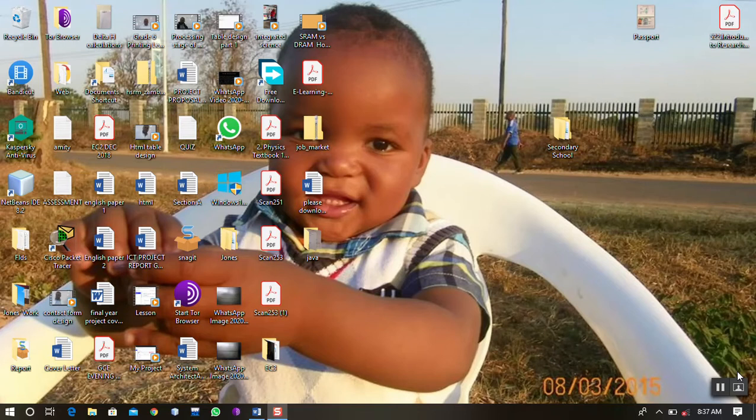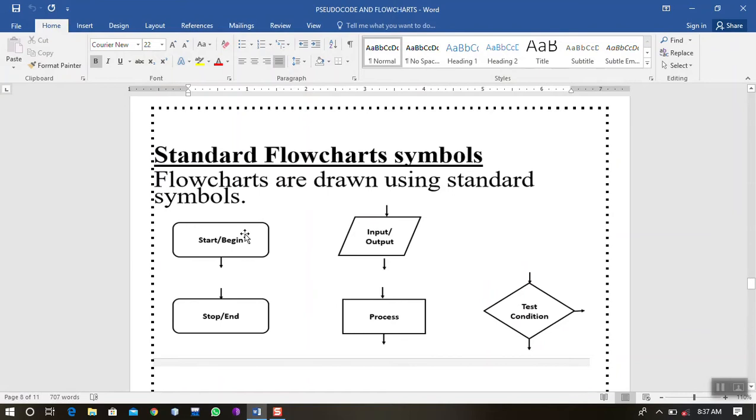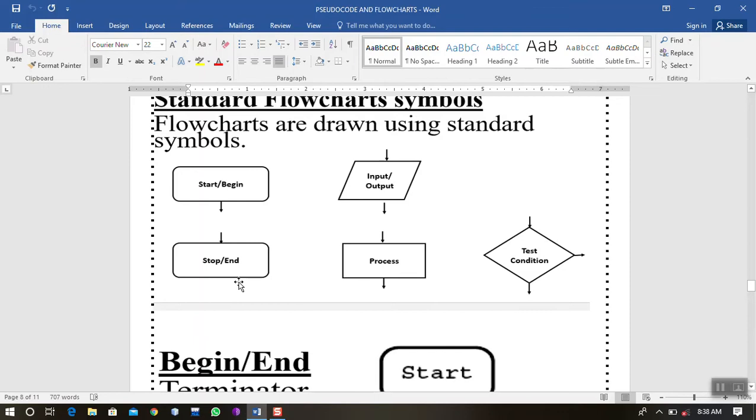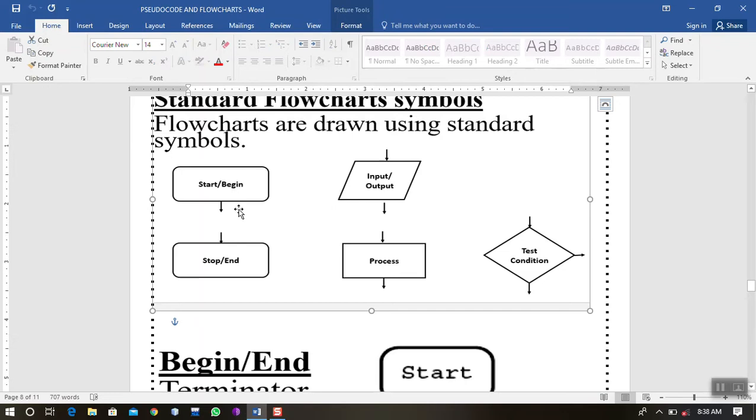I have a screenshot on my computer here showing standard flowchart symbols. When starting a program, these oval symbols are supposed to be used. The oval symbol means start, and the other one means end or stop. Every time you see the oval symbol, it simply means the start and the other one the end of the program.